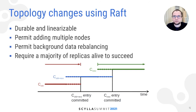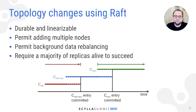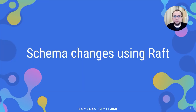In Scylla, we plan to use Raft configuration changes as the first step of any topology change. So when a node is joining or leaving, it will first be added or removed from the global Raft group of nodes. Then we can use the global Raft log to consistently store information about the actual range movements, token additions, token removals, and so on. Schema changes — operations such as creating and dropping keyspaces, tables, user-defined types, or functions — if done using Raft, can also benefit from linearizability.